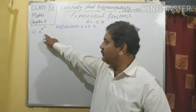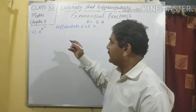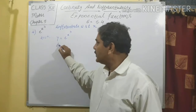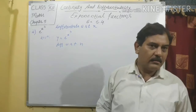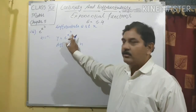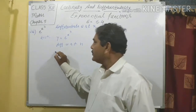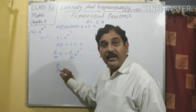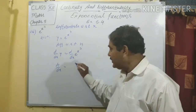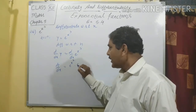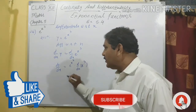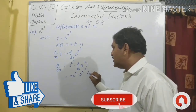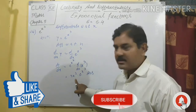Question number 3: differentiate y = e^(x³) with respect to x. Using the chain rule, dy/dx = e^(x³) · d/dx(x³) = e^(x³) · 3x². So dy/dx = 3x²·e^(x³). This is the answer.